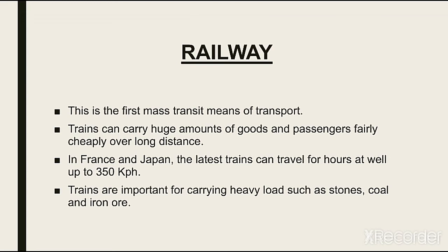فرانس اور جاپان میں latest trains کی speed 350 کلومیٹر فی گھنٹہ ہے۔ پاکستان اور مختلف ممالک میں railways کی condition دیکھیں تو یہ لوگوں کی اولین ترجیح نہیں رہی۔ تاہم جب بھاری بھرکم سامان منتقل کرنے کی بات آتی ہے تو آج بھی railways ہی first choice سمجھی جاتی ہے۔